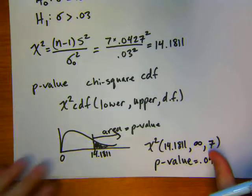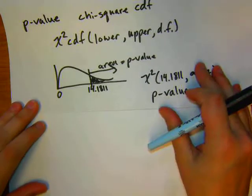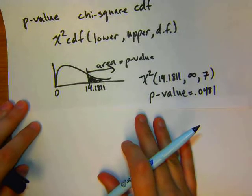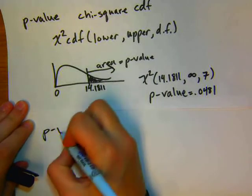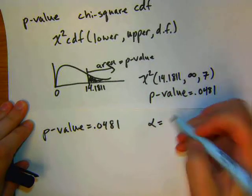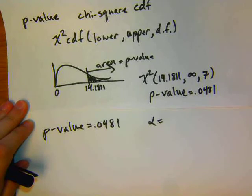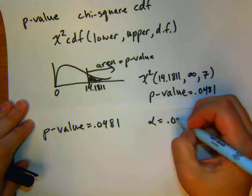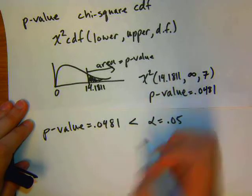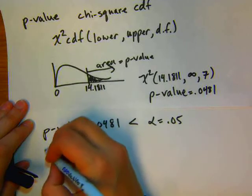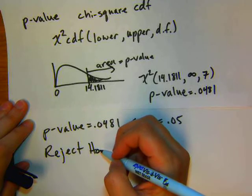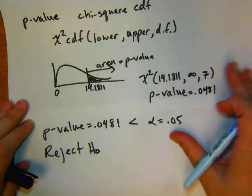Now for our decision: the rule is that any time your p-value is less than or equal to alpha, you reject the null hypothesis. Our p-value was .0481 and alpha was .05. Since 4.81% is less than 5%, our p-value is smaller than alpha. Therefore, we reject the null hypothesis. There are only two possible decisions: reject H-naught or do not reject H-naught.